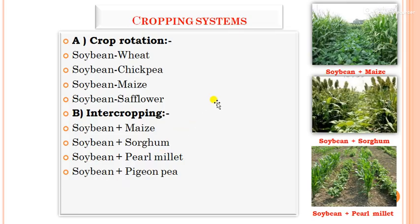In the cropping systems for soybean, under crop rotation, soybean being a leguminous crop is grown as a previous crop followed by non-leguminous succeeding crops like beet, maize, and safflower, benefiting from residual nitrogen and phosphorus. In intercropping systems, examples include soybean plus maize, soybean plus sorghum, and soybean plus pearl millet — for example, four rows of soybean with two rows of maize.